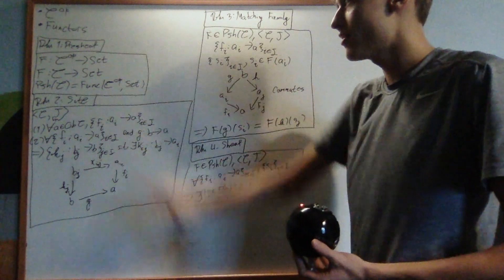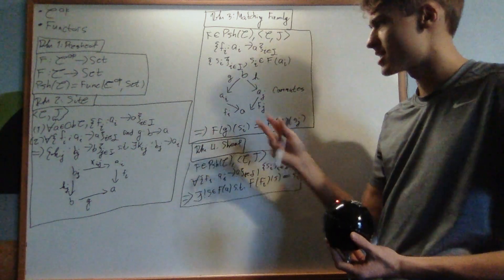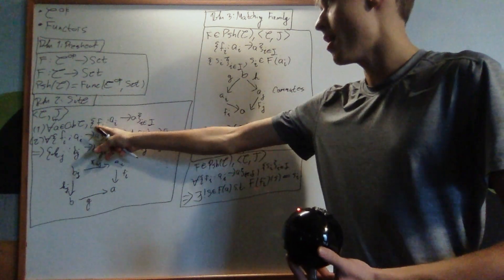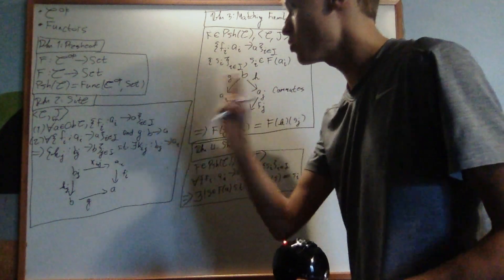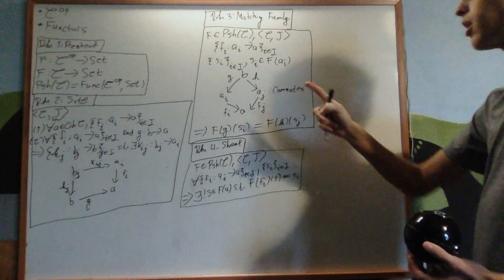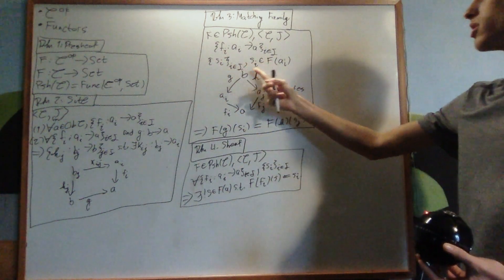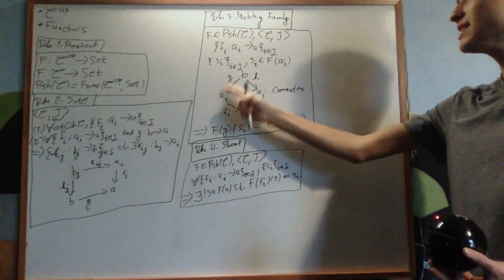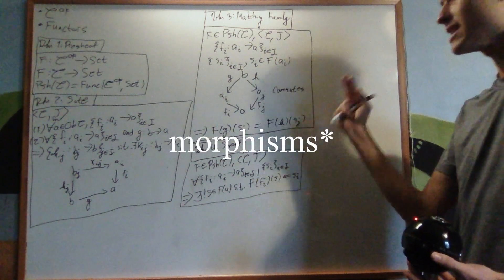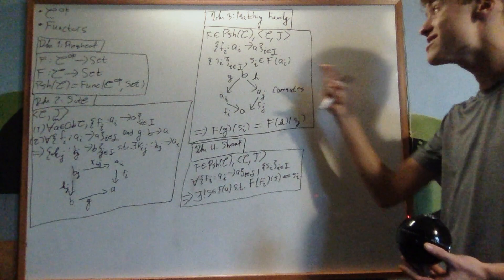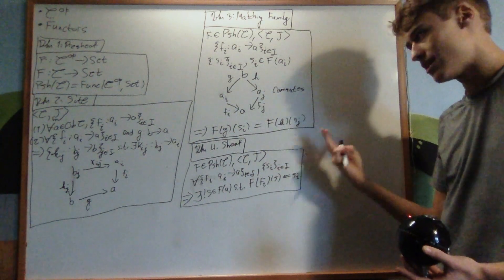To recap: a pre-sheaf is a functor from the opposite category into the category of sets. A site is just covering families of morphisms from objects into a given object, with a transfer condition. A matching family, via a functor and a covering family, is a collection of elements with nice compatibility properties for maps into the domains of the covering morphisms. And a sheaf just uniquely generates the matching family from a single element s in F(A).